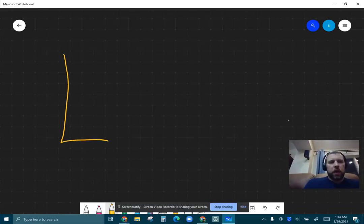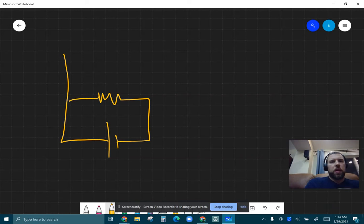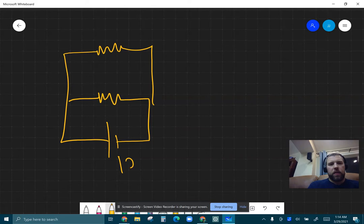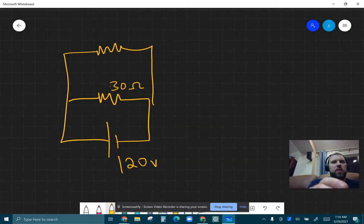Alright, let's look at calculating the current in a parallel circuit here. Let's say I have a 120 volt source, I have a 30 ohm resistor, and a 40 ohm resistor. So two different types of resistors.